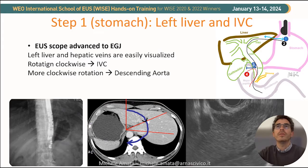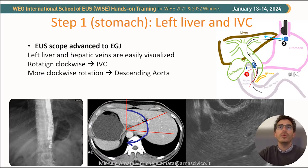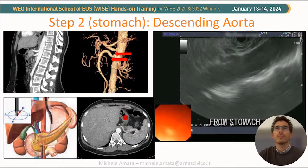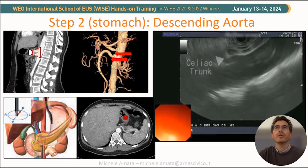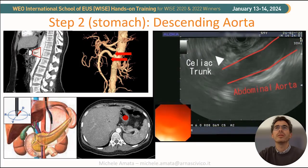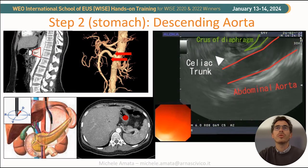As you see in the fluoroscopic picture, as we advance the scope to the EGJ, the transducer is usually facing anteriorly, looking at the left lobe of the liver. Then you need to turn clockwise to let the transducer face the aorta posteriorly. Looking posteriorly, we will observe the aorta, the celiac trunk, and the superior mesenteric artery. We need to distinguish the crus of the diaphragm.